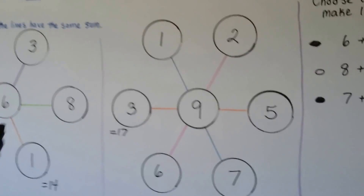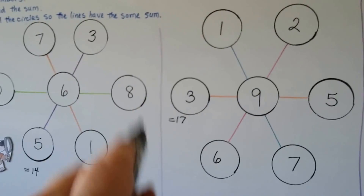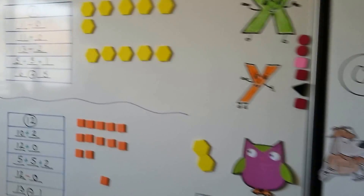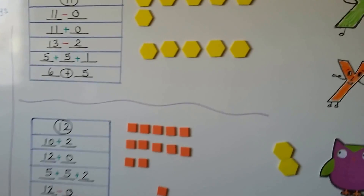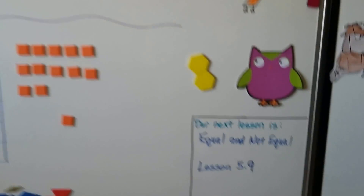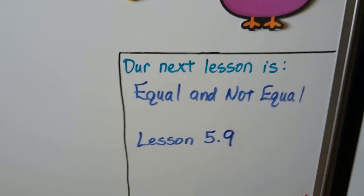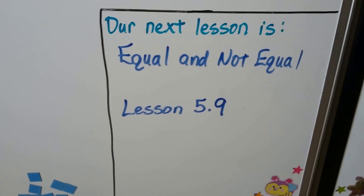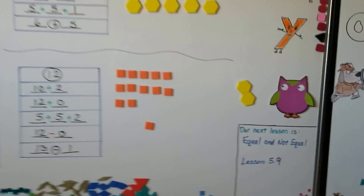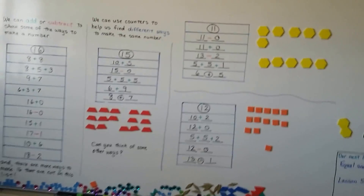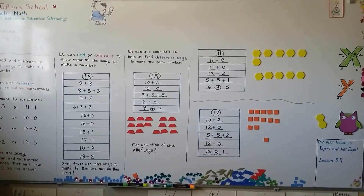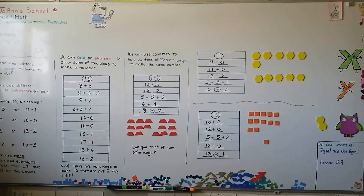So now you know how to do these circle puzzles. And you know that there are a lot of different ways to make a number — you can make tables like this and come up with your own ways. Our next lesson is equal and not equal, Lesson 5.9. I hope you're having a wonderful day. Keep trying hard — I'm proud of you, and I'll see you in the next video. Bye!